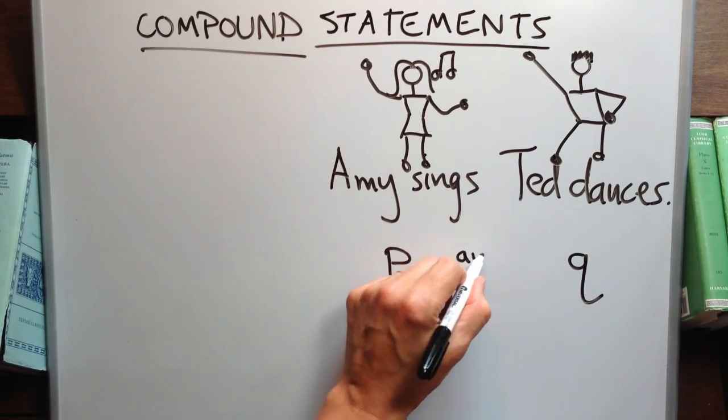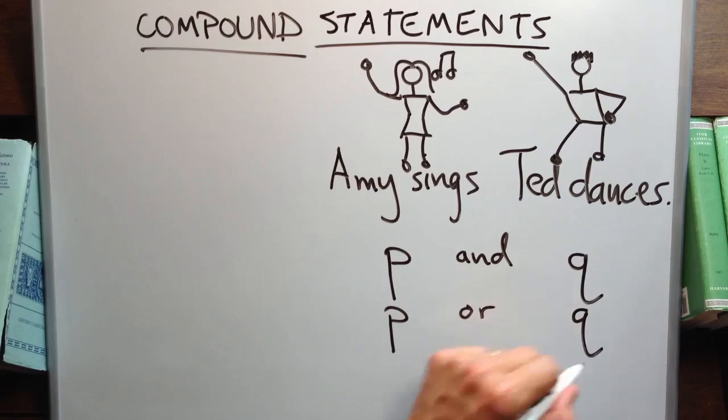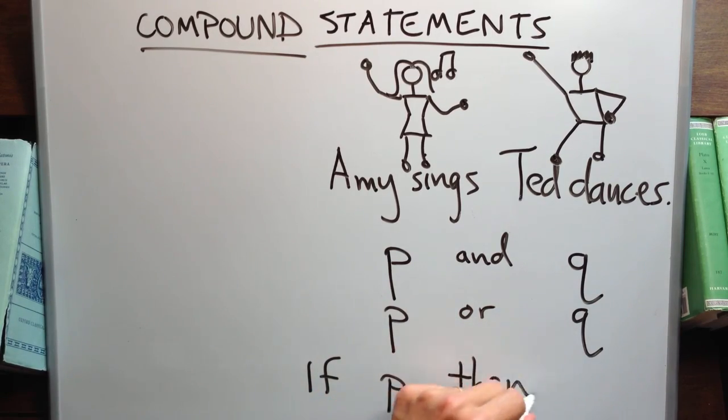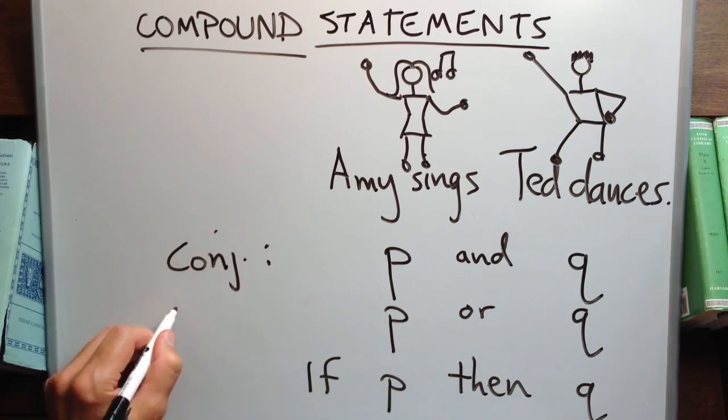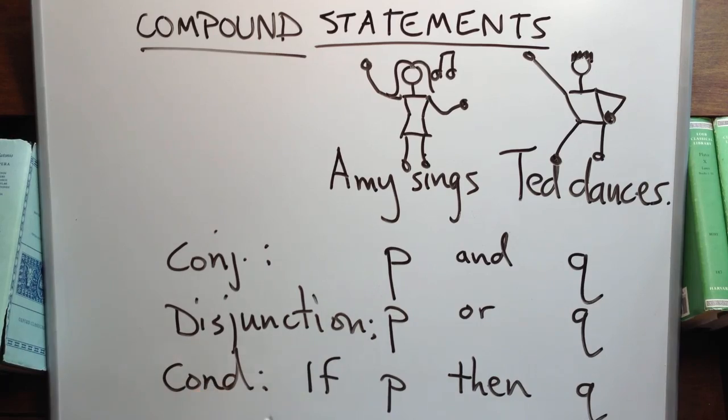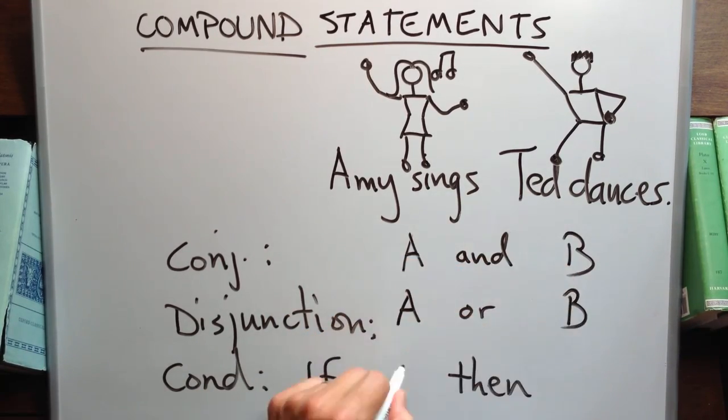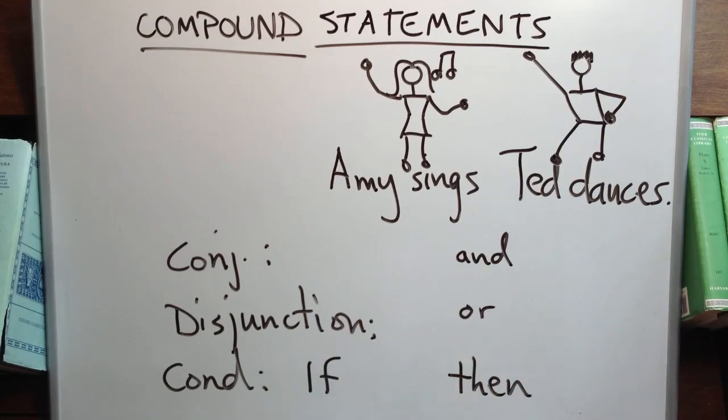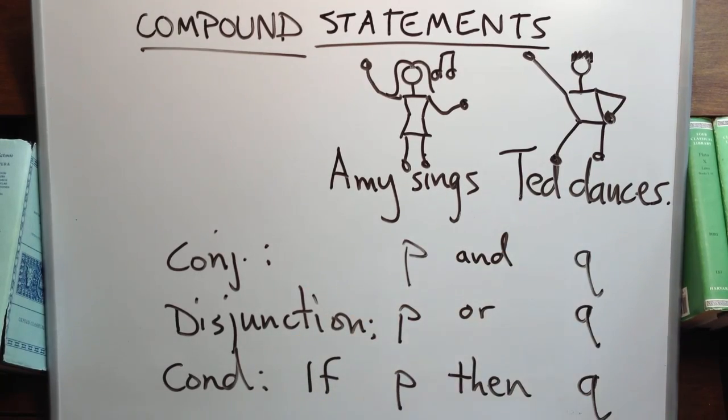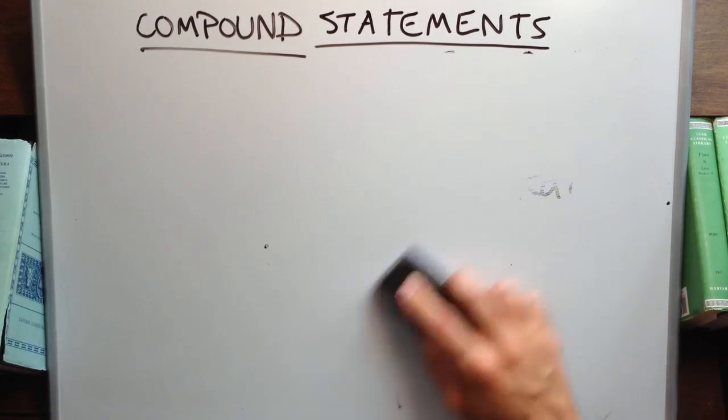In logic, we like to represent simple statements, or compound statements even, with letters. P, Q, R, S, T. Some like to use A, B, C, but I prefer P, Q, R, because P reminds me I'm dealing with an entire proposition, both subject and predicate.